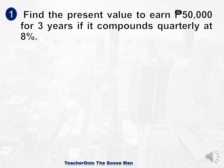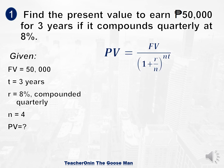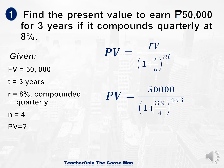Let's have example number 1: Find the present value to earn 50,000 pesos for 3 years if it is compounded quarterly at 8%. First, let's identify the given. The future value is 50,000, the rate is 8% compounded quarterly, so the frequency n is equal to 4. We want to find the present value. Present value equals 50,000 divided by the expression 1 plus 8% over 4 raised to 4 times 3.